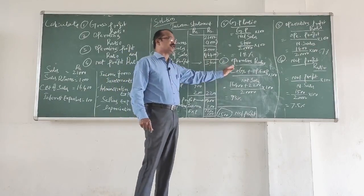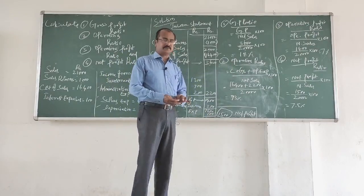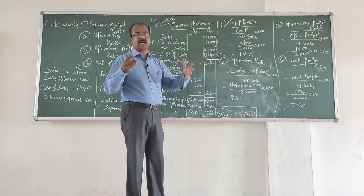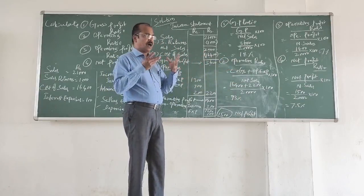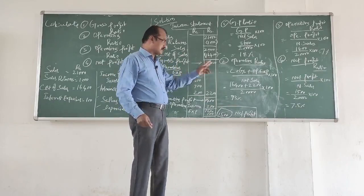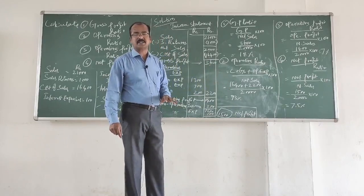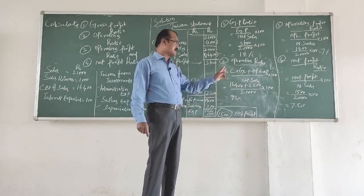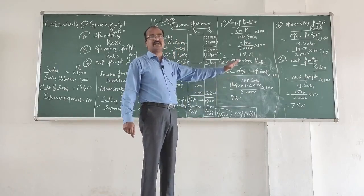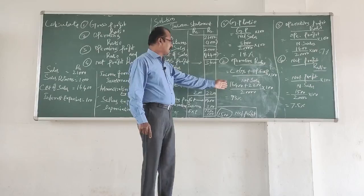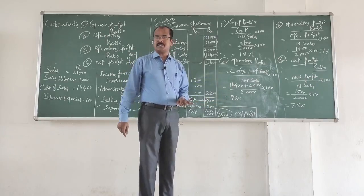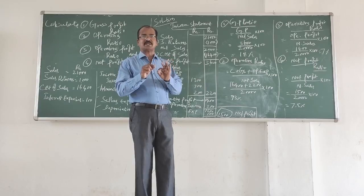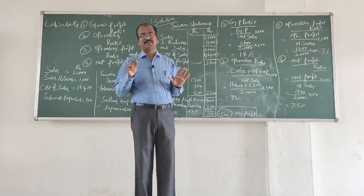The second ratio is operating ratio, which shows the relationship between net sales and operating cost. The formula is: cost of goods sold plus operating expenses, divided by net sales, multiplied by 100. This gives us 93%.